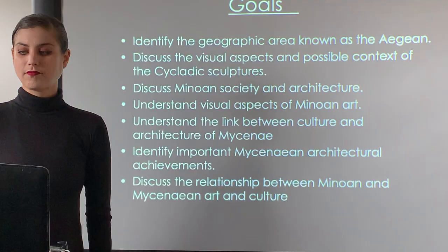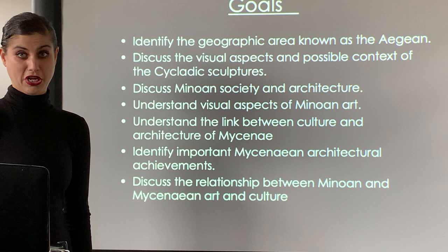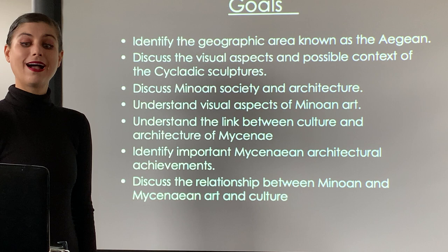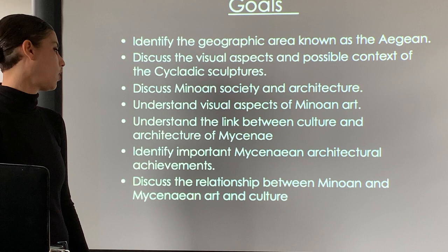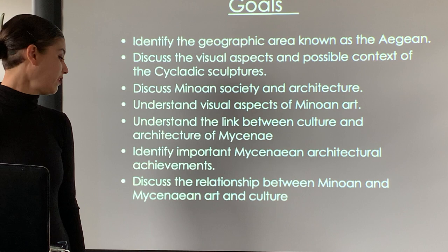Our learning objectives: identify the three different geographical locations of the Ancient Aegean, discuss the visual aspects and possible context of Cycladic sculptures, discuss Minoan society and architecture, understand the visual aspects of Minoan art, understand the link between culture and architecture of Mycenae, identify important Mycenaean architectural achievements, and discuss the relationship between Minoan and Mycenaean art and culture.